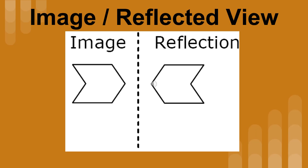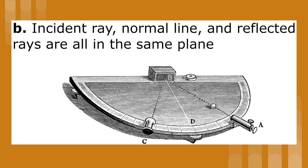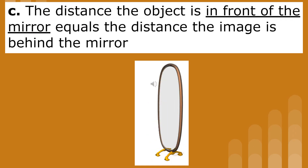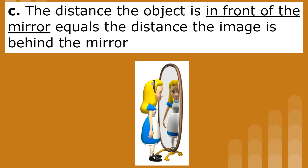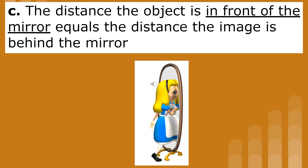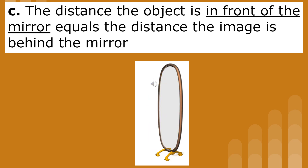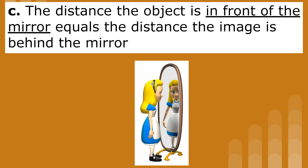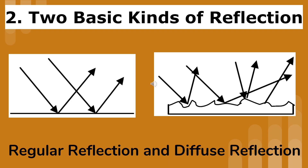The shape on the left represents the image, and the shape on the right represents the reflection. The incident ray, the normal line, and the reflected ray are all on the same plane. The distance an object is in front of a mirror equals the distance the image is behind the mirror. So as you walk backwards in front of a mirror, the image that you see appears further behind the mirror.